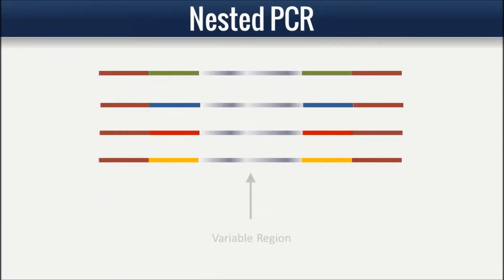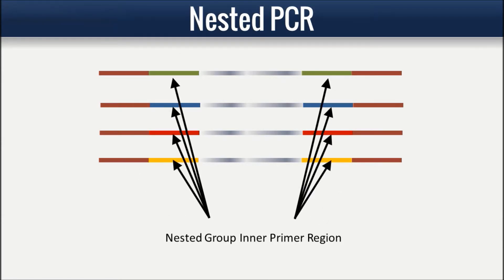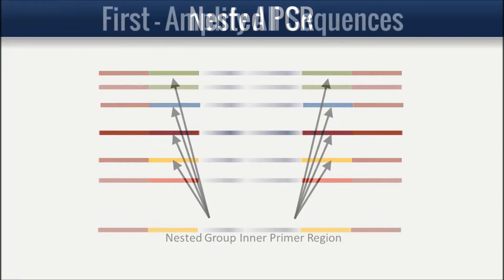If multiple groups of sequences are going to be extracted from the product, use nested PCR to first amplify all sequences, and then use the inner primer regions to amplify the individual groups.